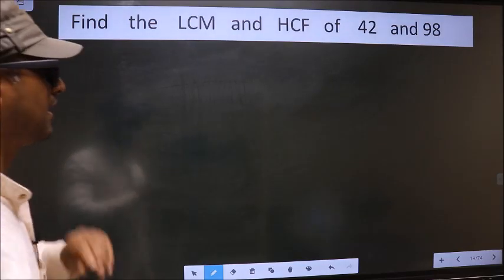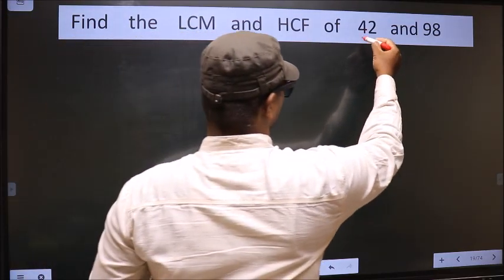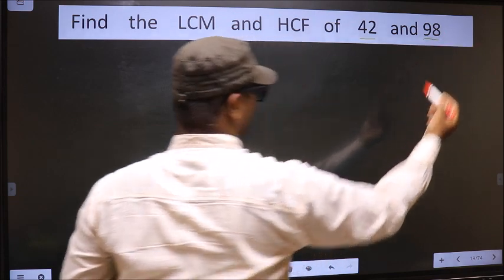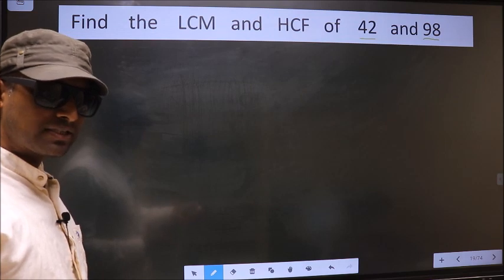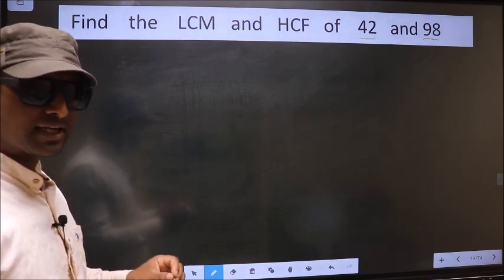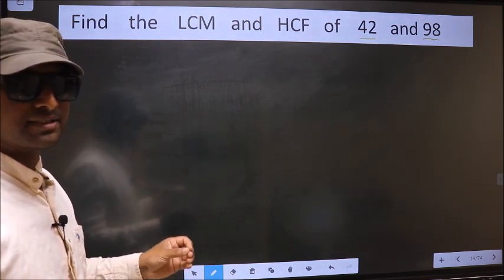Find the LCM and HCF of 42 and 98. To find the HCF and LCM, first we should do the prime factorization of each number separately.